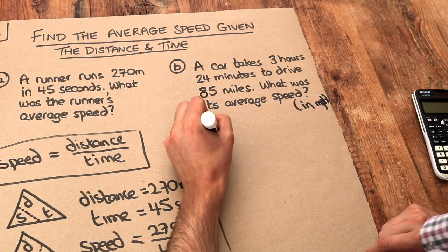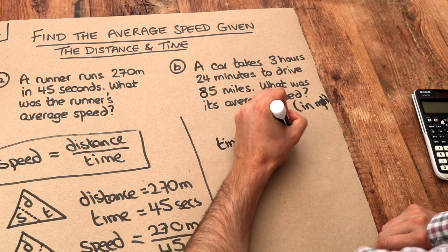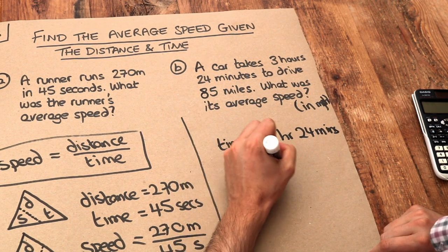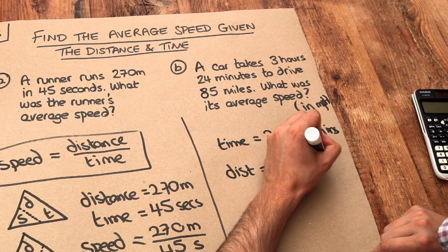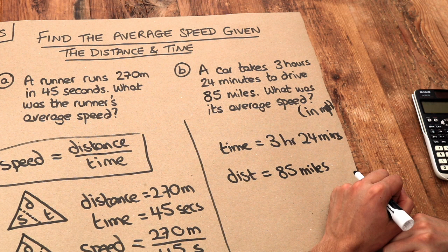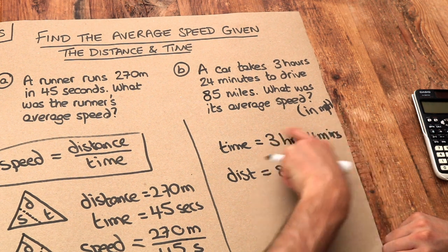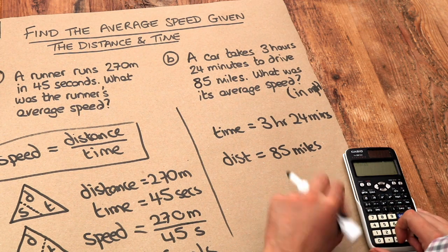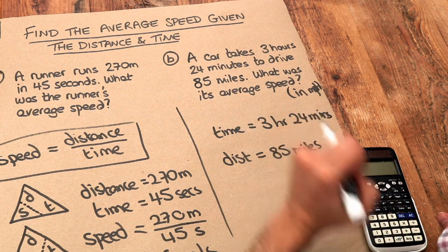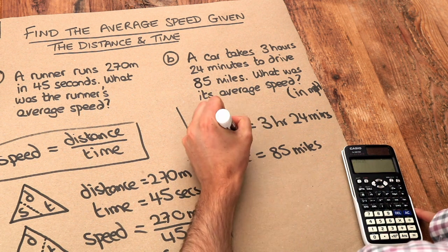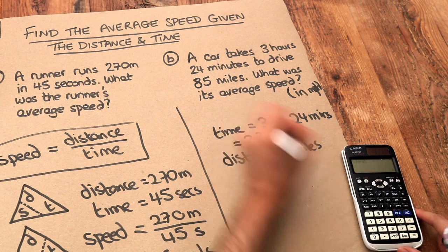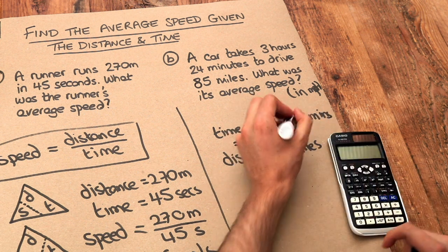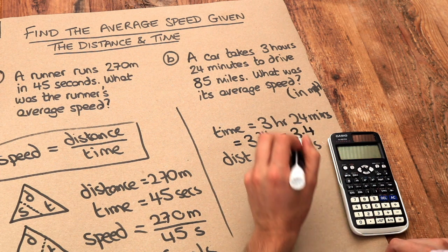The time is 3 hours 24 minutes and the distance is 85 miles. Notice that the unit of speed is miles per hour, so our time unit needs to be in hours, not hours and minutes. We convert 24 minutes into a fraction of an hour: there are 60 minutes in an hour, so it's 3 and 24 sixtieths of an hour. 24 over 60 equals 0.4, so the time is 3.4 hours.